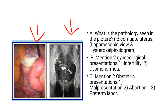The next question: mention two gynecological presentations. You can have infertility and dysmenorrhea. Then mention two obstetrical presentations — if this woman were to fall pregnant, there might be recurrent abortions or preterm labor.